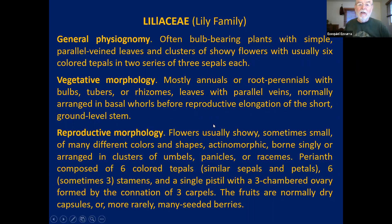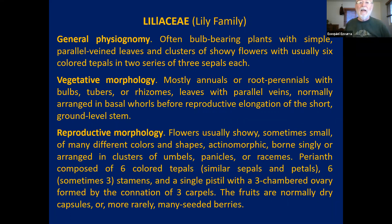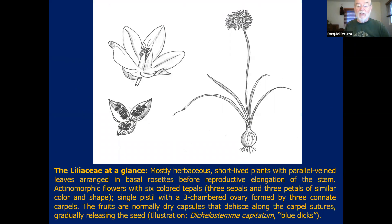The traits in general: they're often bulb-bearing plants with simple parallel-veined leaves — monocots — and clusters of showy flowers with six colored tepals in two series of three. The vegetative morphology includes mostly annuals or root perennials, with the exception of the agaves that can last for many years. In the case of the agaves, they live for many years, but once the rosette is ready to reproduce, it sets a flowering stem, reproduces, and dies.